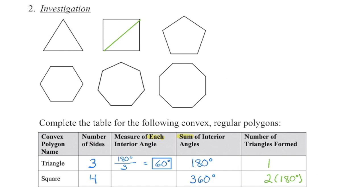Adding up all the corners confirms the total degrees in the square. For each angle, we know it's 90 degrees — but we can also take those 360 degrees and divide evenly among the four equal angles, which shows that each angle has a measure of 90 degrees.